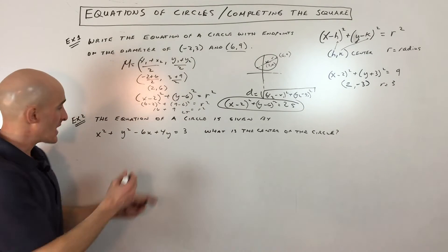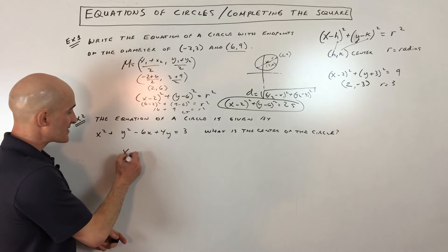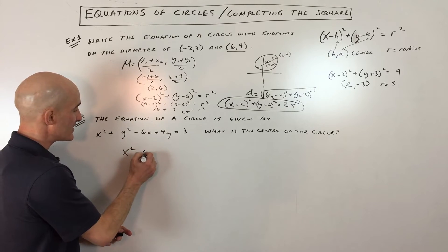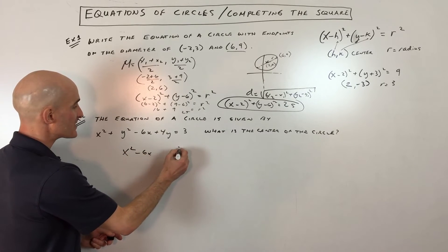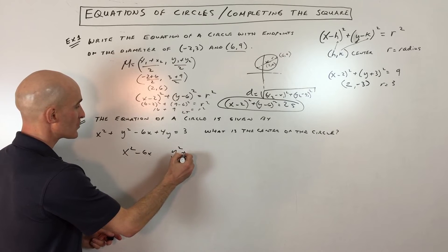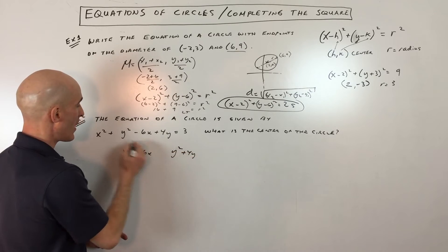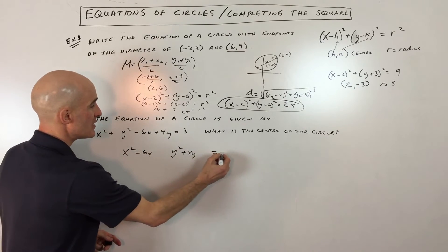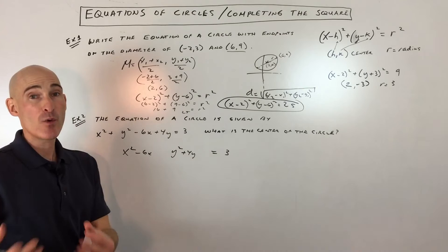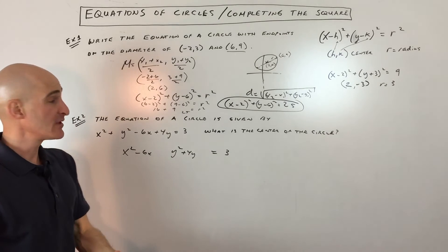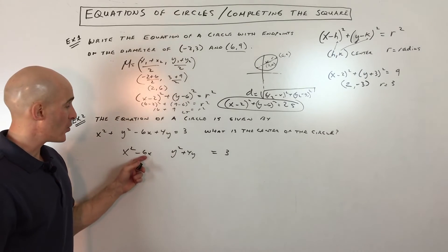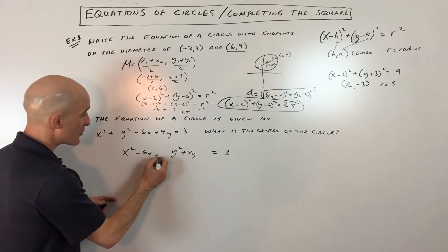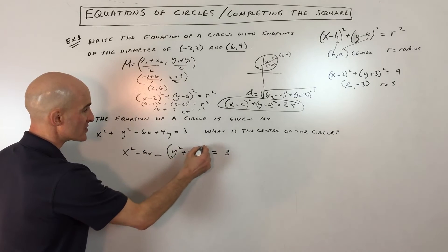First, group the x terms together: x squared minus 6x, and group the y terms: y squared plus 4y, equals three. Now we're going to complete the square.